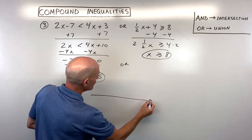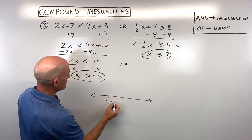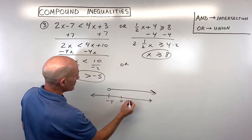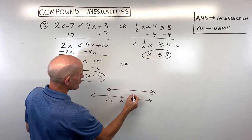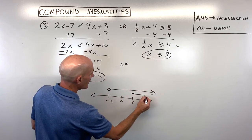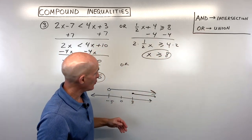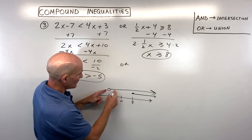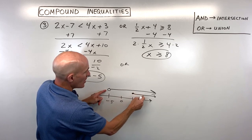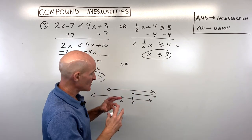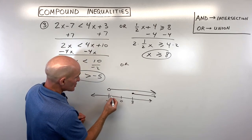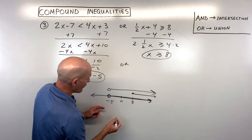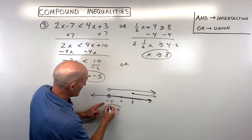On the number line, x is greater than negative 5 — so to the right of negative 5 with an open circle. X is also greater than or equal to 8. Since 'or' means union, we combine all values greater than negative 5 together with all values greater than or equal to 8. These together give us our final answer: x is greater than negative 5.